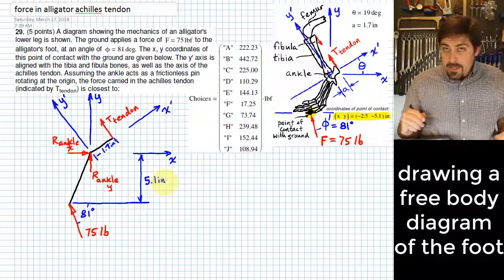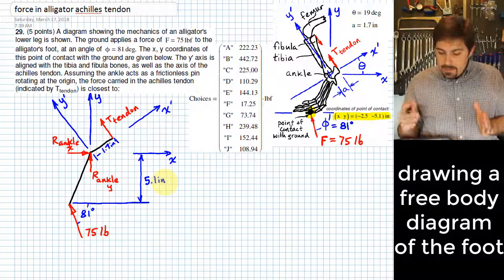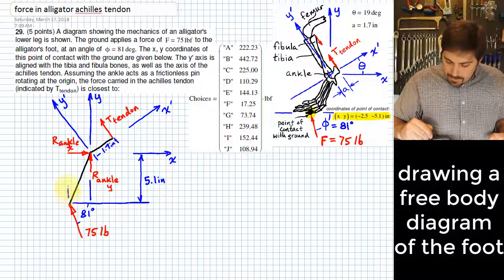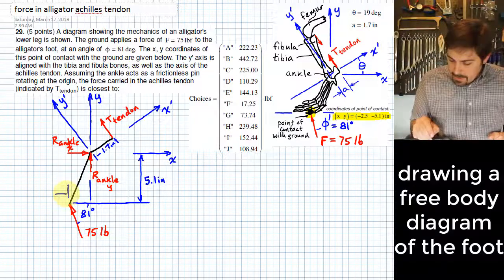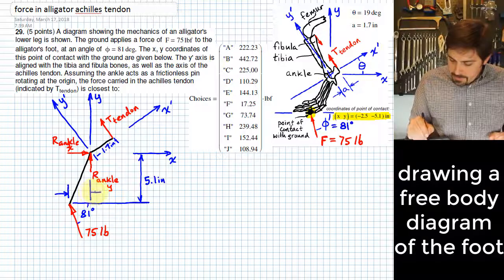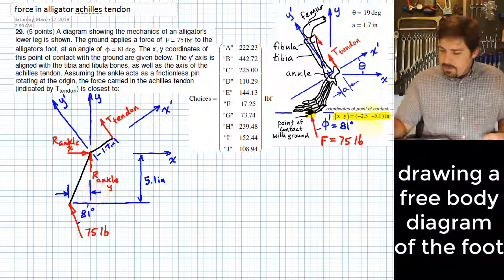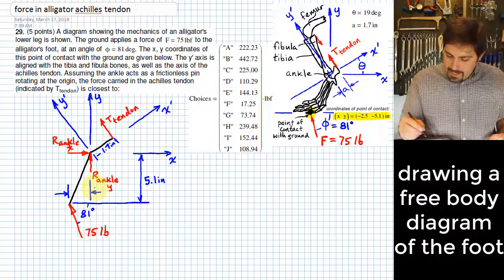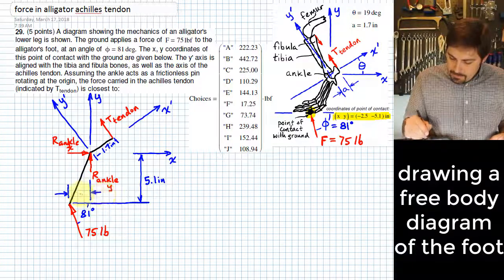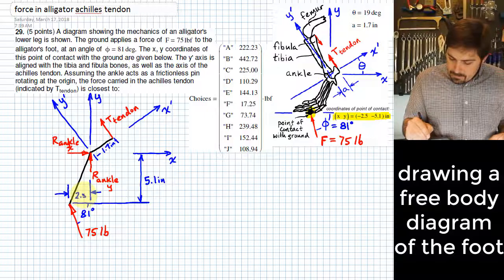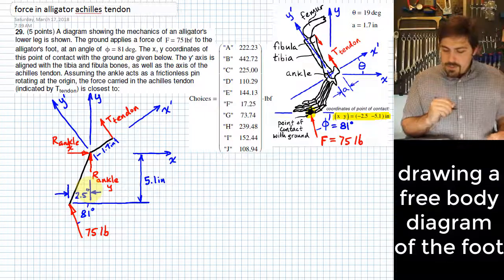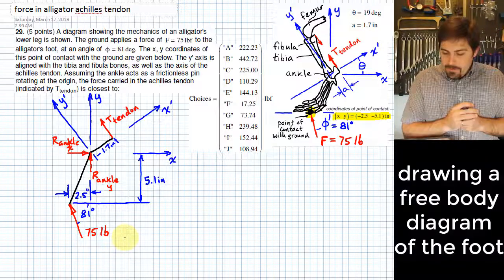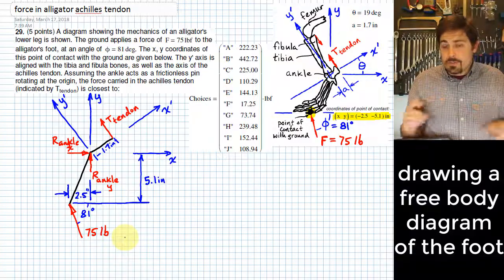And the other information we have is how far it is from the Y axis over to where this force is applied. So I'll just show that right here and say that length right there, since it's negative 2.5, that's 2.5 to the left of the Y axis, so this is just 2.5 inches. And I believe that actually sets up our free body diagram where it has everything that we need to know on it.